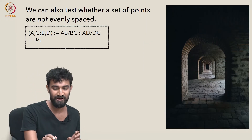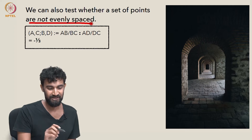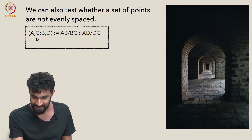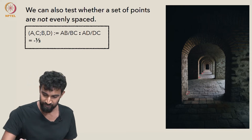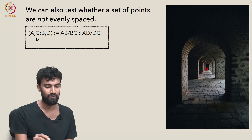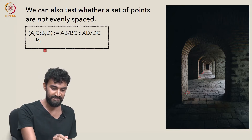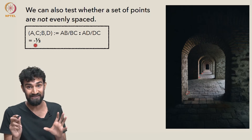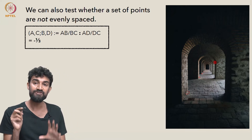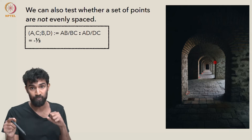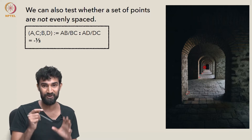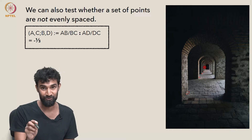We can also test whether a set of points is not evenly spaced using the cross-ratio. For example, we could take a set of four collinear points, call them A, B, C, and D, and calculate the cross-ratio to see what we get. If we get negative 1 third, then it's quite possible — highly likely — that they're evenly spaced. But if we get something other than negative 1 third, then there's no chance they're evenly spaced; no perspective view of these four points will make them evenly spaced. That's another property of the cross-ratio we're going to prove very soon.